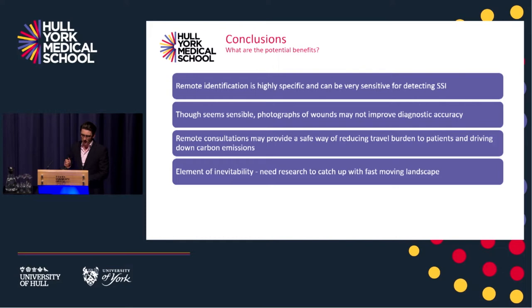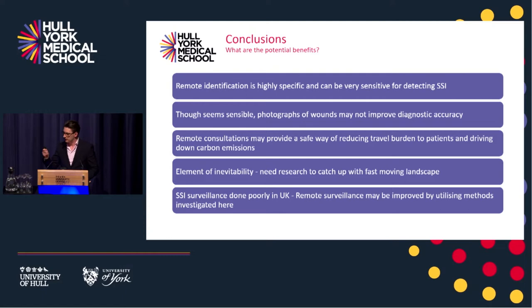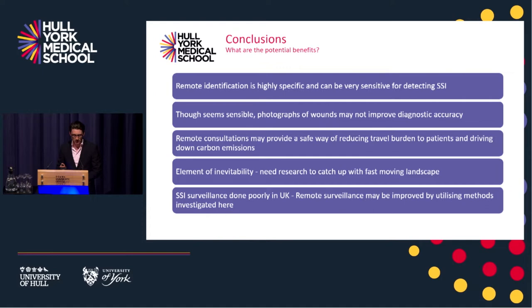There's an element of inevitability about this. Because of what has happened over the last two years, everyone has moved things online, and actually the research base behind it hasn't really caught up yet. No one is asking: yes, everyone is doing this, but should we be? And the surveillance for infection in this country is very poor. In 2019 to 2020, 125,000 operations were added into the Public Health England surveillance database compared to the 8 million operations that were undertaken. Of those 125,000, 100,000 were in orthopaedics, which has mandatory surveillance — but that mandatory surveillance is only one quarter of your yearly data, and you can choose as an organisation which quarter you provide. It's very bad.